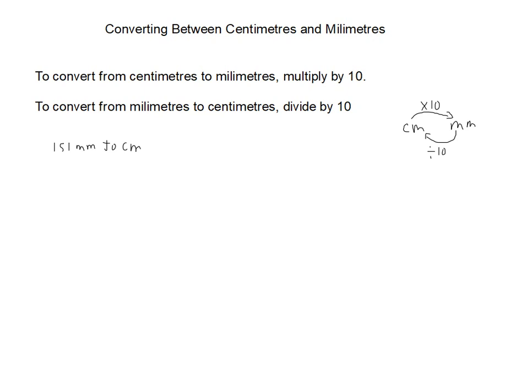So we're going from millimeters to centimeters, that's this direction, so we're going to divide by 10. So we take that 151, divide it by 10, and we get 15.1. So our 151 millimeters works out to 15.1 centimeters.